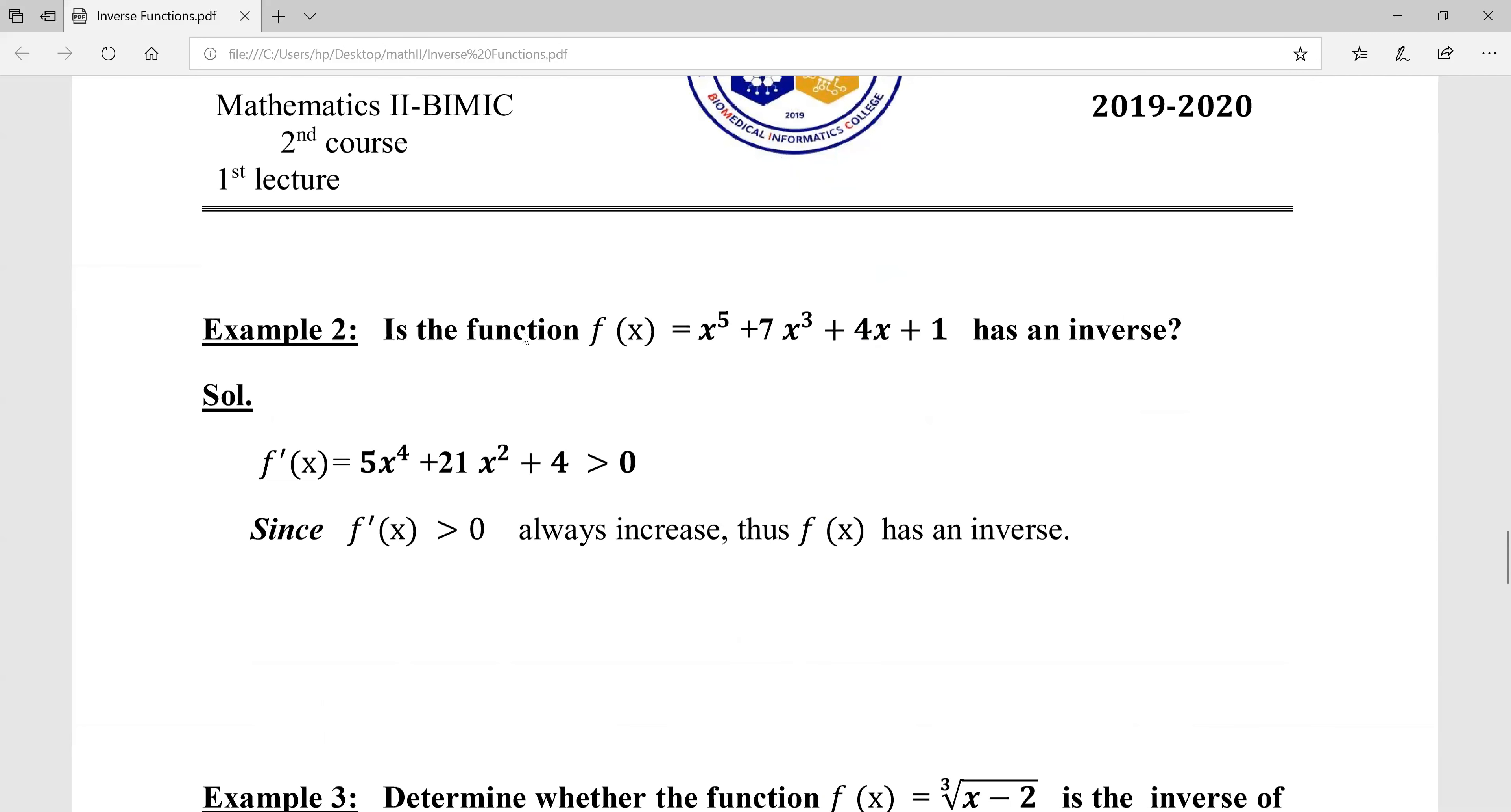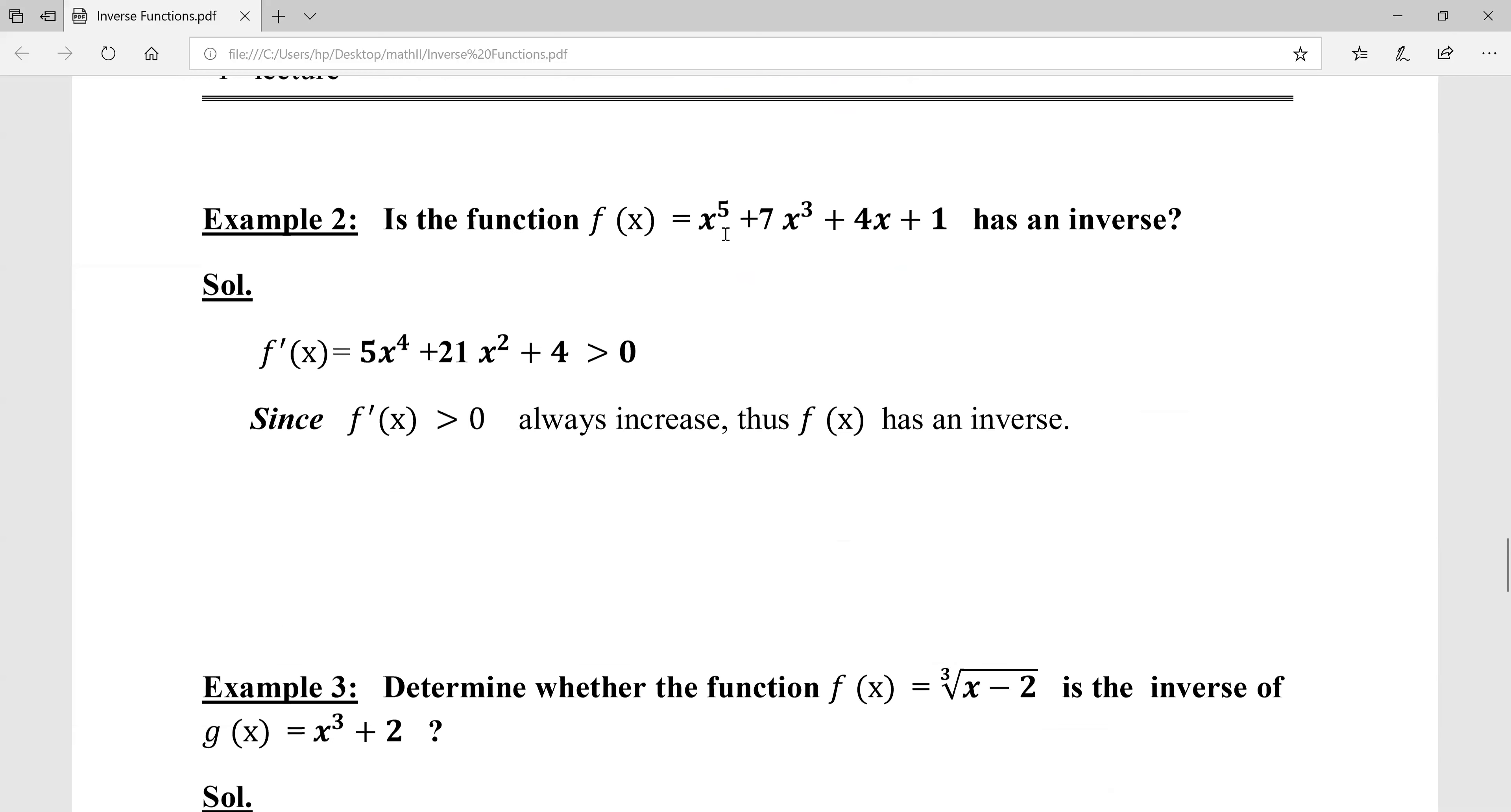Example 2: Does the function f(x) = x⁵ + 7x³ + 4x + 1 have an inverse? To verify, first check if this function is one-to-one. For any value x takes, the image f(x) will be different. For example, if x = 0, f(0) = 1. If x = 1, f(1) = 7 + 8 = 13. So it's one-to-one.